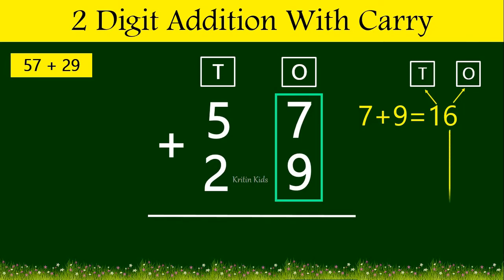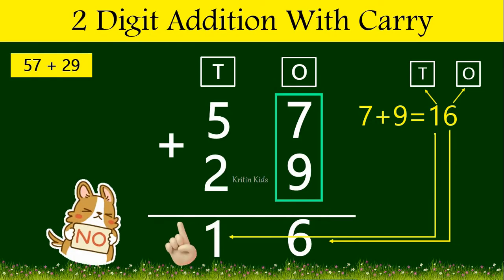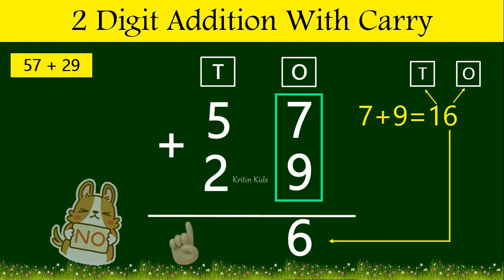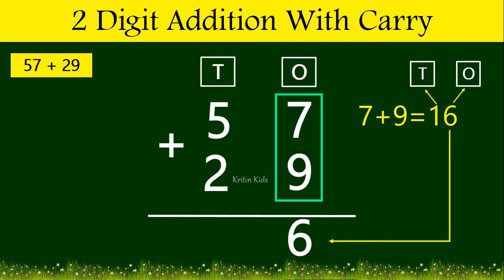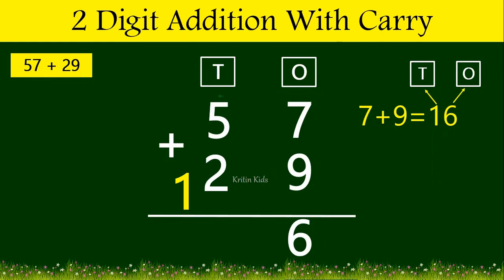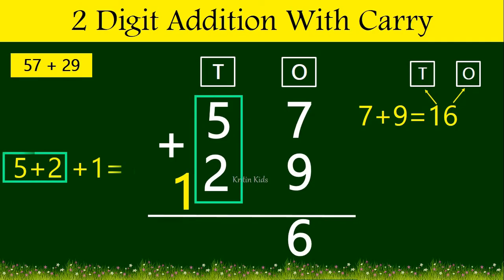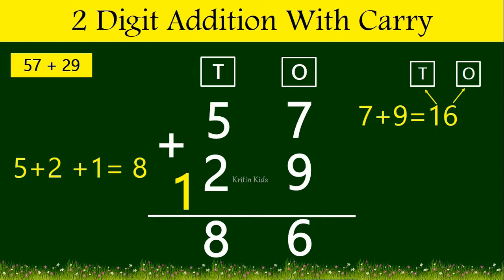Now let's write 6 at the ones position. Should we write this 1 at the tens position? No, we should not write this 1 at the tens position result place because we have not yet added the numbers at this position. So we will just keep it as carry. Now let's add numbers at the tens position: 5 plus 2 plus this 1 as carry. So 5 plus 2 plus 1 gives us 8. So 57 plus 29 gives us 86.